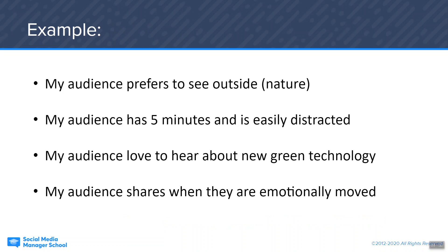Let's do an example. Let's say my audience prefers to see outside — they like nature, they like all things outside. My audience also only has five minutes and is extremely distracted. My audience loves to hear about new green technology. And my audience shares when they are emotionally moved by my content. So that means I'm going to have to film things outside, do it in a very concise way inside of five minutes, be super hyper-focused on new green technology keywords for SEO, and create some sort of story arc that involves emotion — happy, awesome, or even upset. As long as it's emotionally moving, that's what will make people share.